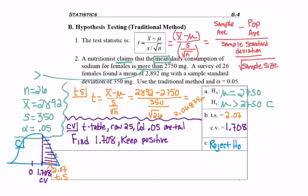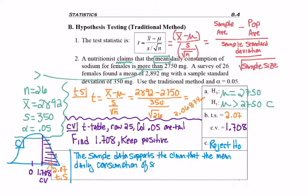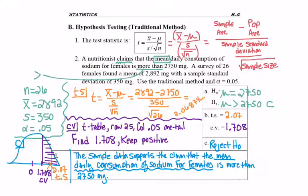Then I go ahead and look at if my claim is H1 and I reject H0. This means that my final conclusion will start with the sample data supports the claim that. And then I finish with the mean daily consumption of sodium for females is more than 2,750 milligrams. Don't forget, we're looking for some key parts. Which parameter are you discussing? The mean. What is the context about that mean? It's the daily consumption of sodium for females. What is the claim about that mean? That it is more than. But specifically, it's more than what value? 2,750 milligrams.